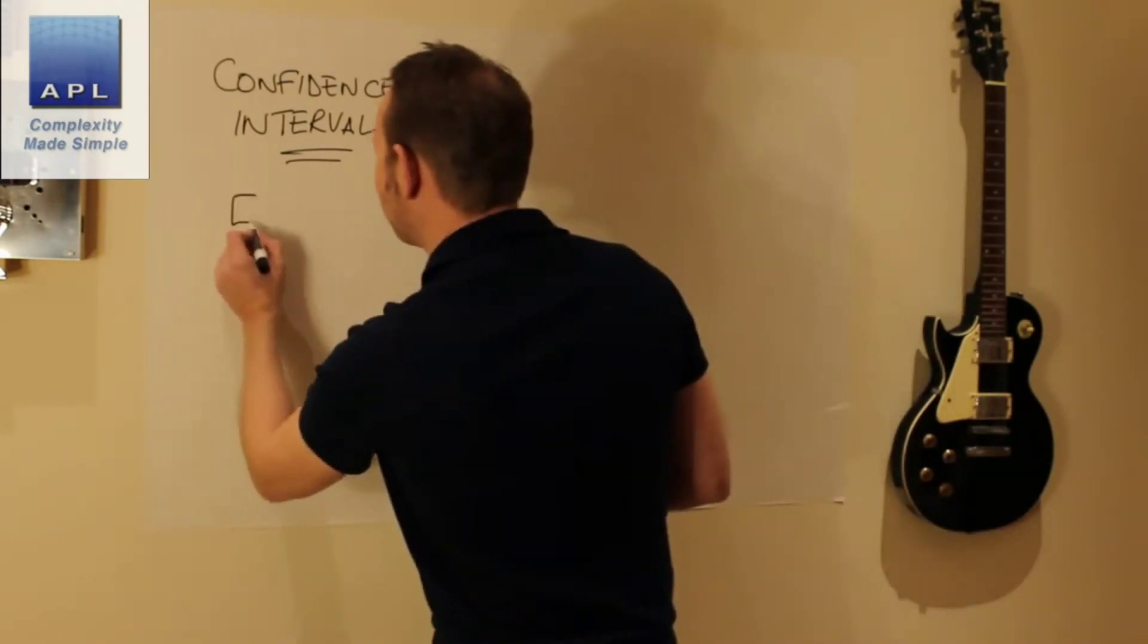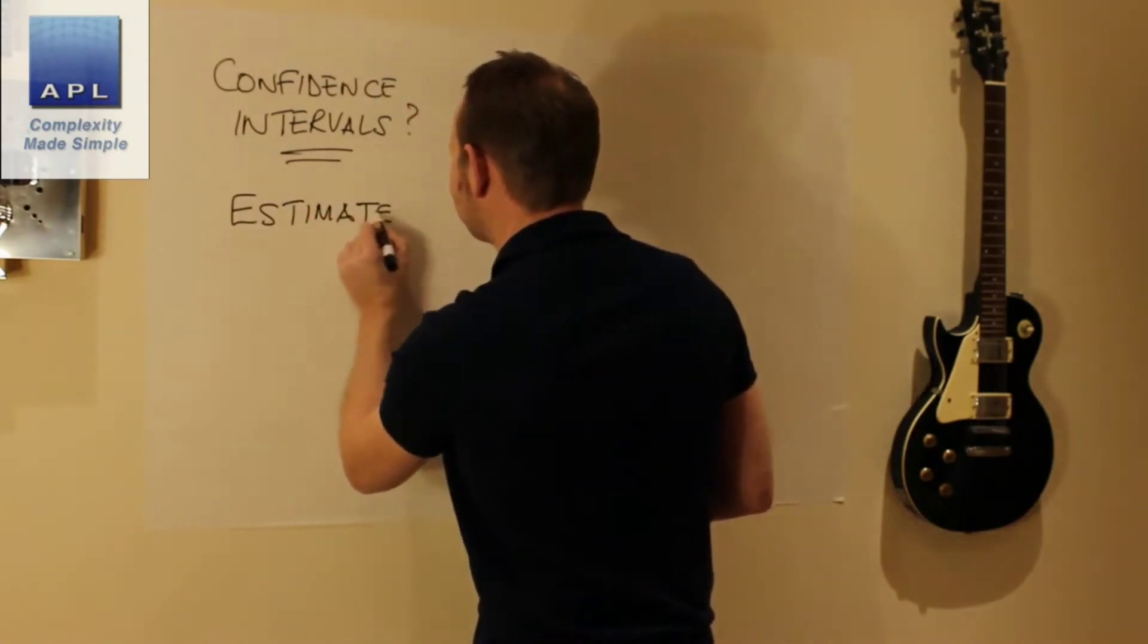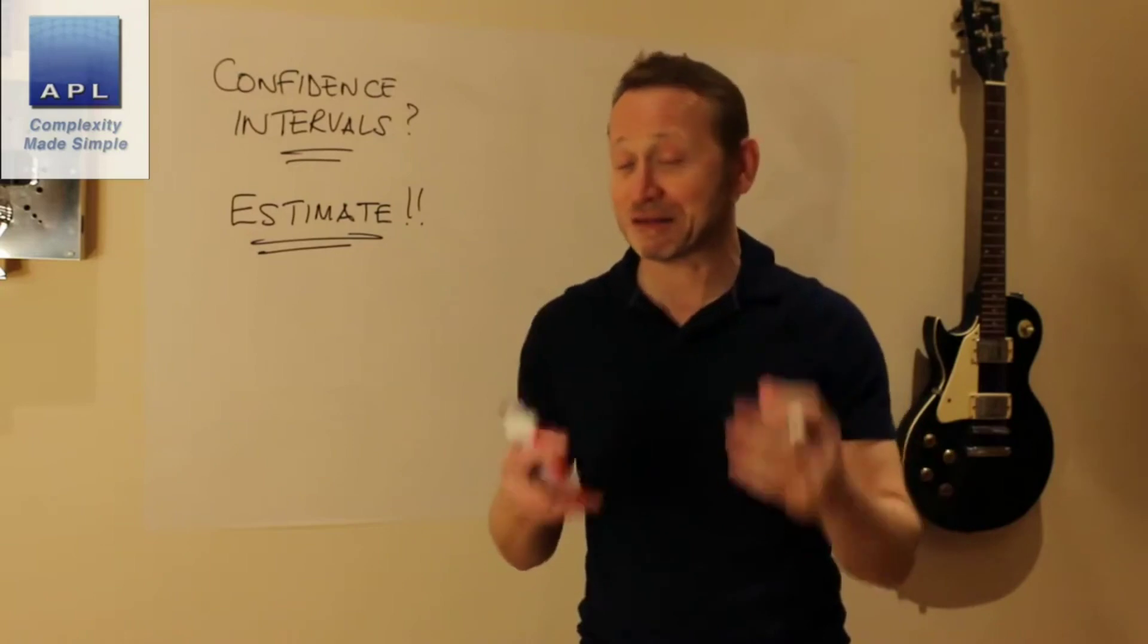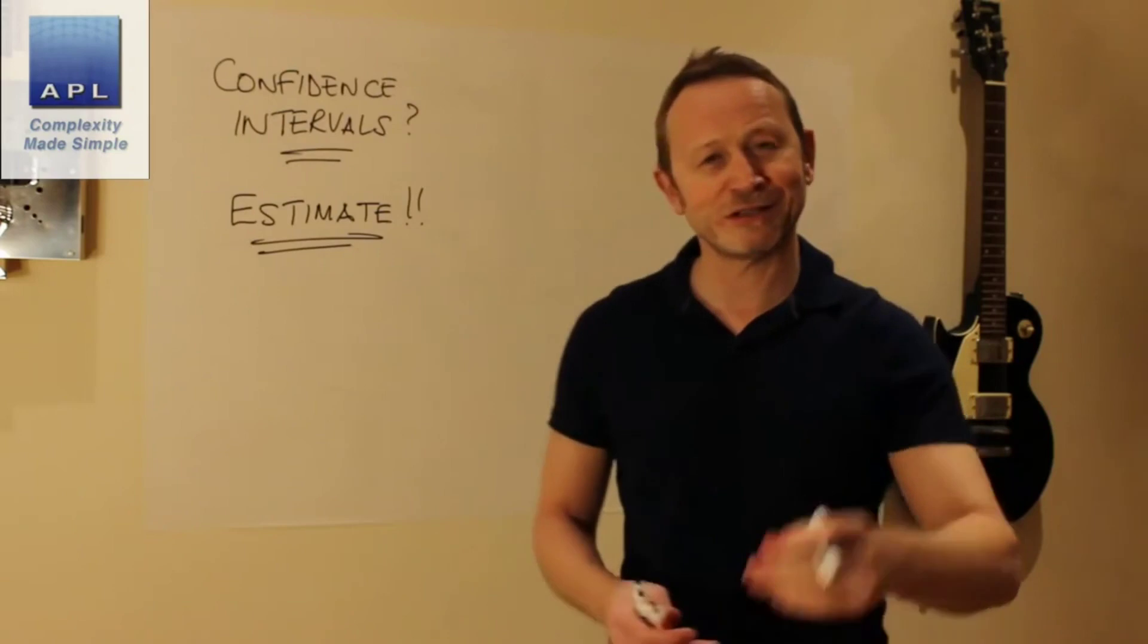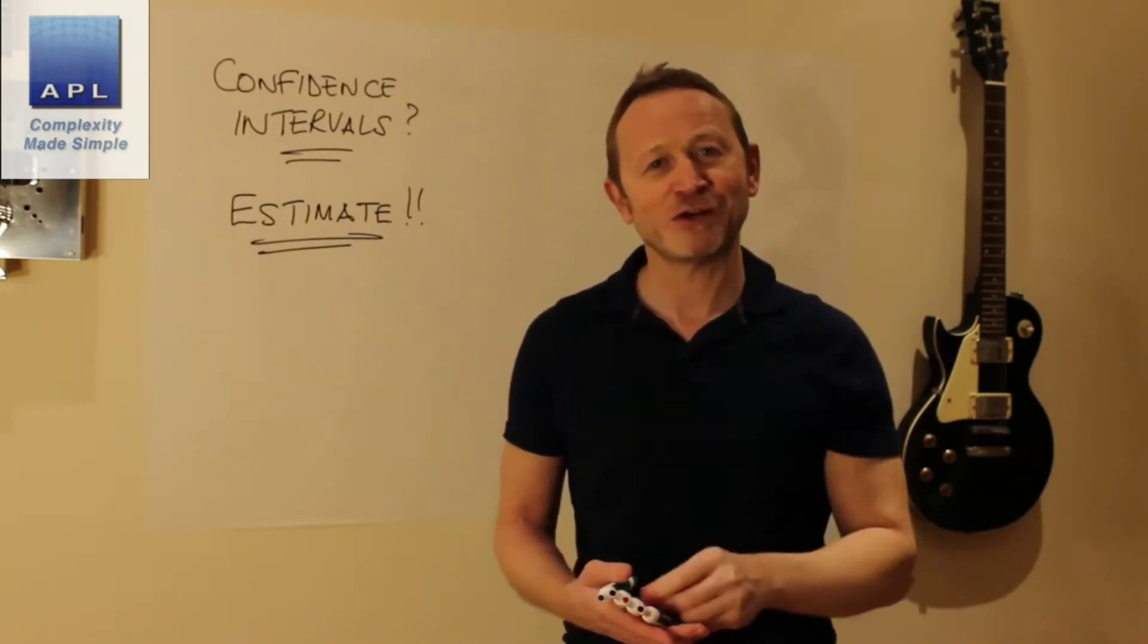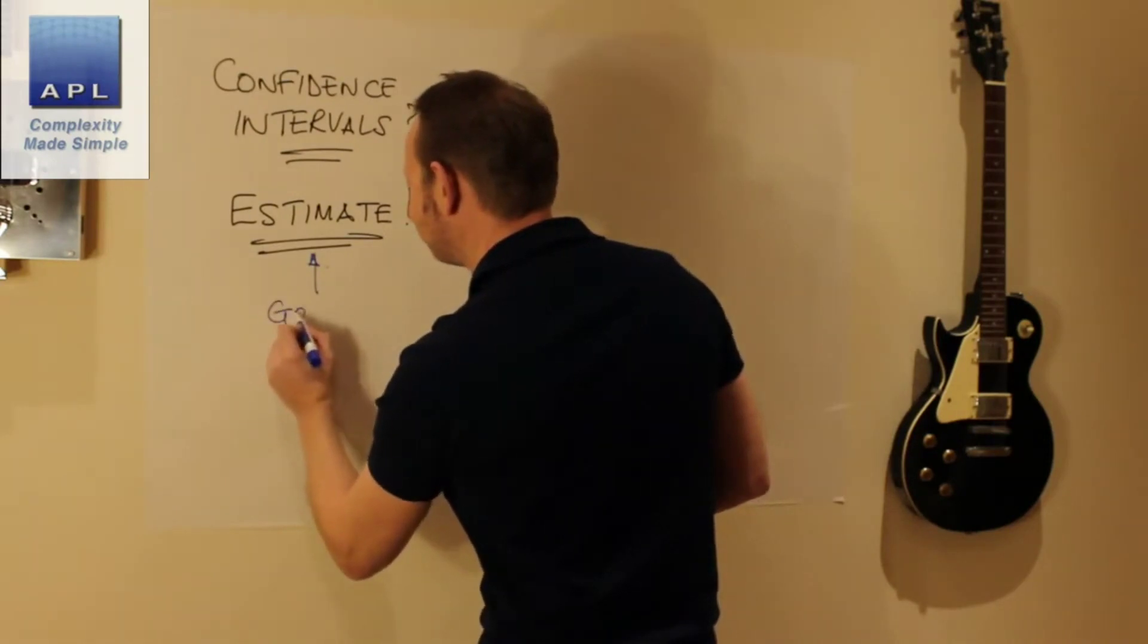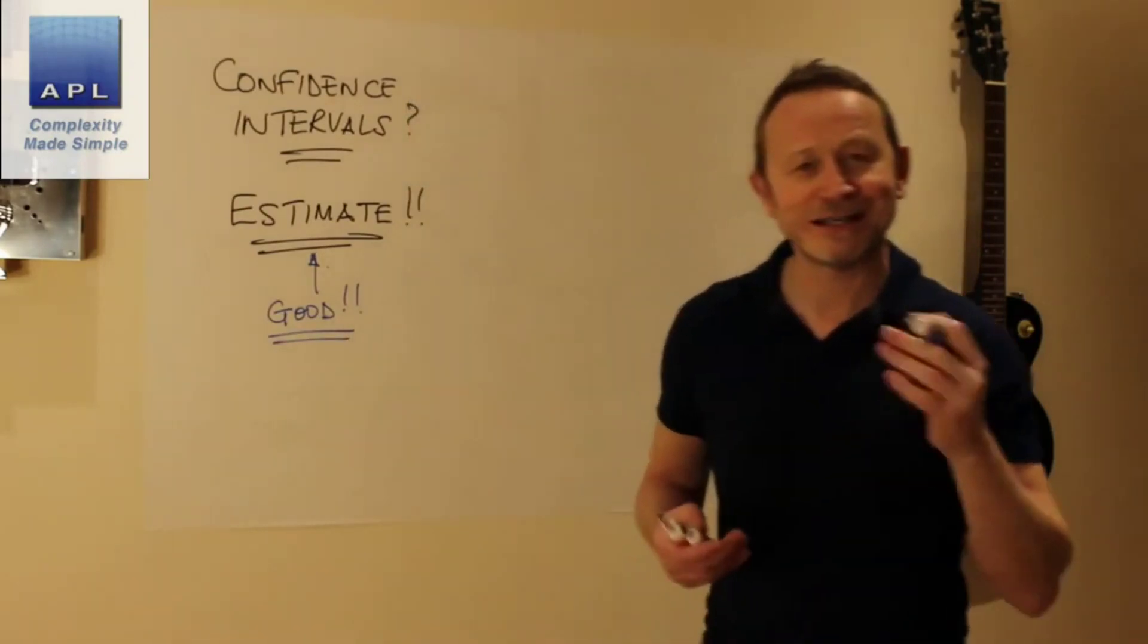Every number you look at, every statistic you look at, is an estimate. I know we tend to think of mathematics and numbers as being very precise. You should look at them and think: every number I look at is an estimate. And then what is the next sensible question you would ask if you take that on board? Well, what you would ask is: how good an estimate is it?